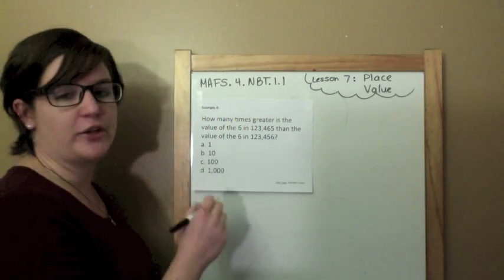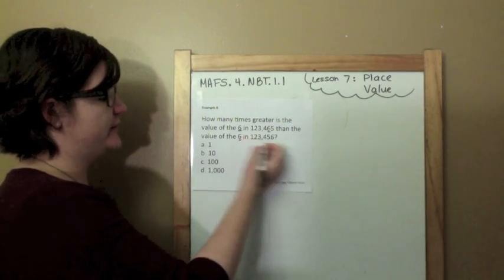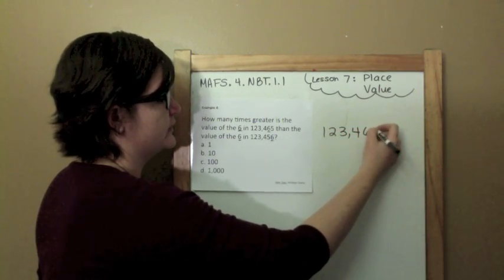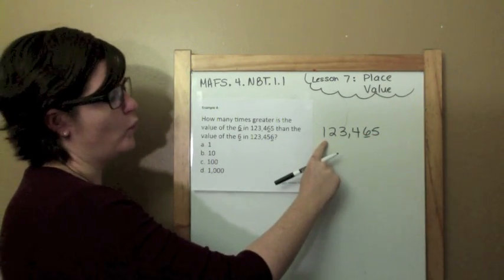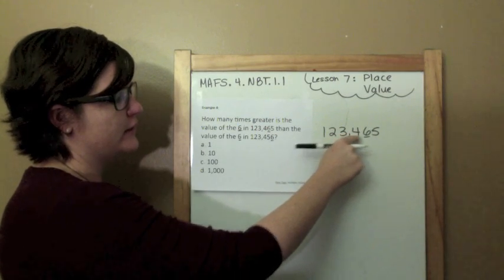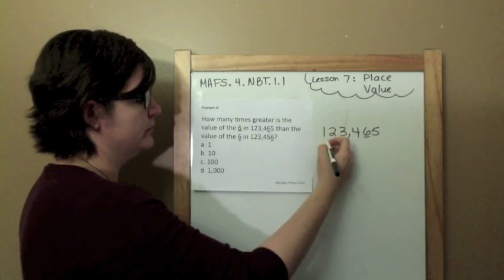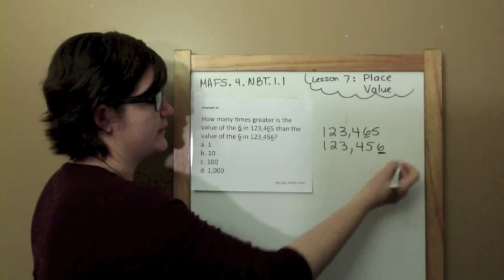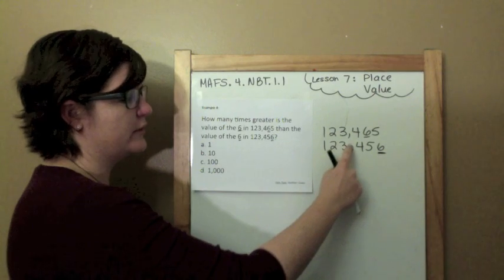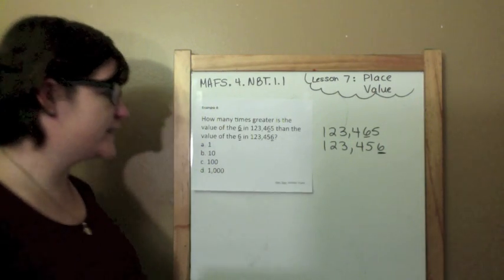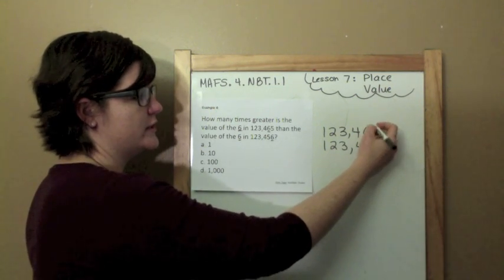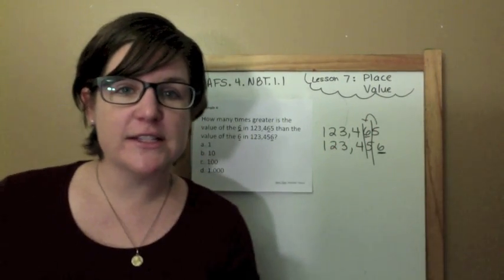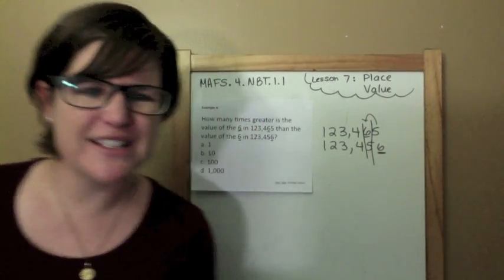Example 4: how many times greater is the value of the 6 in 123,456 compared to the value of the 6 in the other number? Let's line them up and compare. From this 6 to this 6, I just hop from one place to another. And when we hop from one place to the very next, it is times 10.